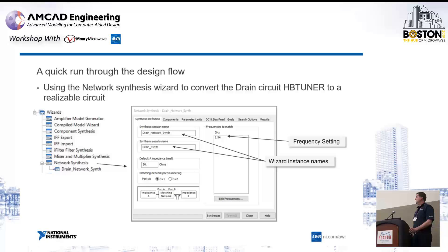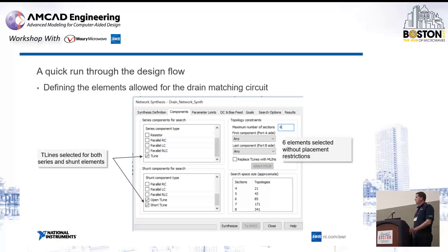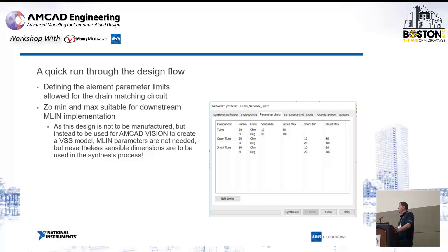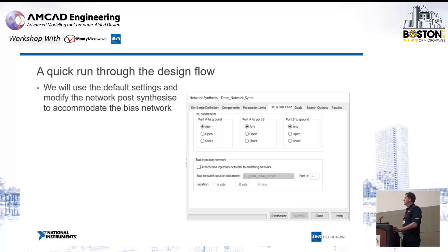Starting with the load side, we define what components we want to consider when we do our synthesis. Malcolm is going for a distributed match, picking ideal transmission lines and not selecting any lumped components. We specify how many matching sections to consider, and we can also set limits for any elements — for instance, with a high-power device with a large flange, you can stipulate that the first element the part sees should be a wide transmission line using parameter limits. Again, we're not going for a manufacturable design on this first cut, but rather something to be a quick prototype to feed into AMCAD Vision to create a behavioral model for system simulations.